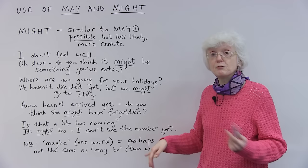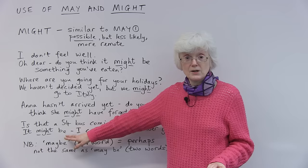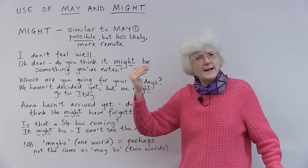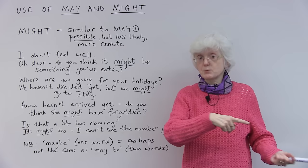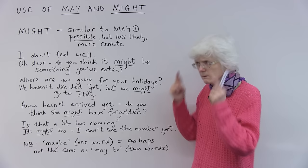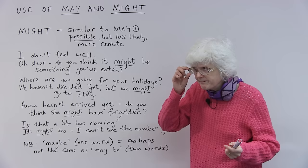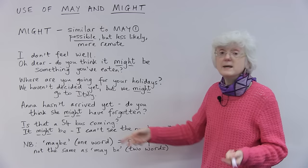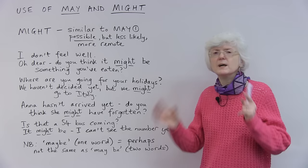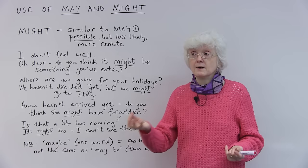And finally, one of the buses I sometimes travel on is a number 54. And but because I can't see very well, if the bus is coming from a long way away, I can't see the number until it's nearer. So I might say to someone else waiting, saying, is that a 54 bus coming? And they could reply, hmm, they can't see the number either. It might be, I can't see the number yet. So there are four different buses. It might be a 54, but it could be one of three other possible ones.